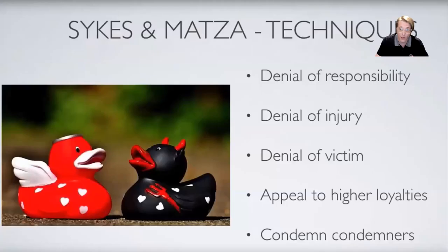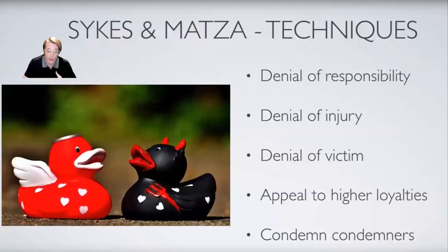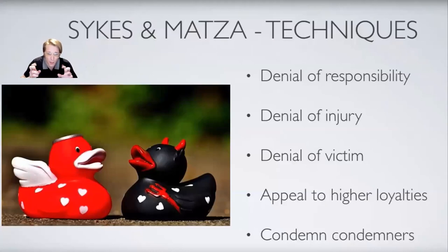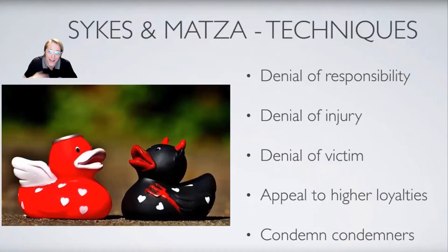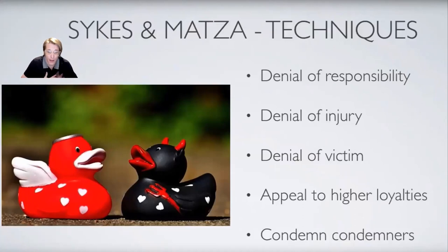Sykes and Matza talk about how we may use these cultural abilities to neutralize stigma. The five techniques are: denial of responsibility — the act was beyond one's control, "I couldn't help it"; denial of injury — no harm, no foul; denial of the victim — there is no specific victim, such as "the company is so big" or "no one is even in charge of reporting the missing office supplies"; appeal to higher loyalties — the behavior is rationalized as serving a greater good, breaking a lesser norm to fulfill a higher purpose, like "I stole the bread so the kids wouldn't go hungry"; and condemning the condemners — "I am not the problem, you're the problem" — where you are doing something but blaming others for it.